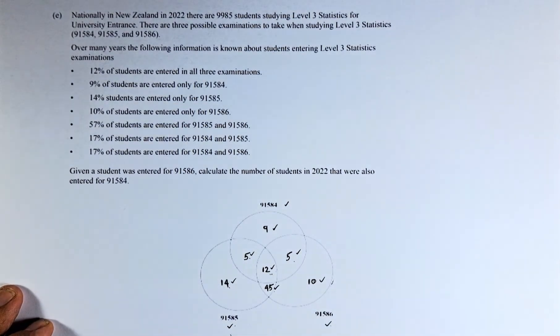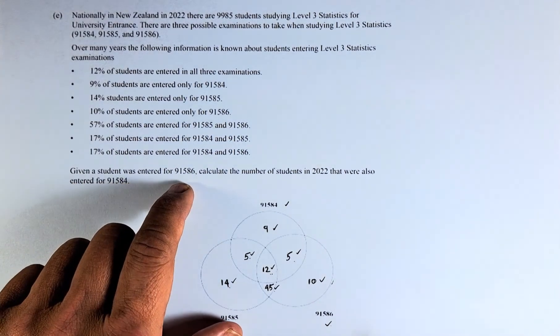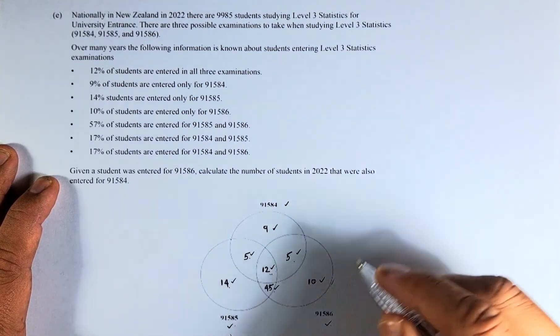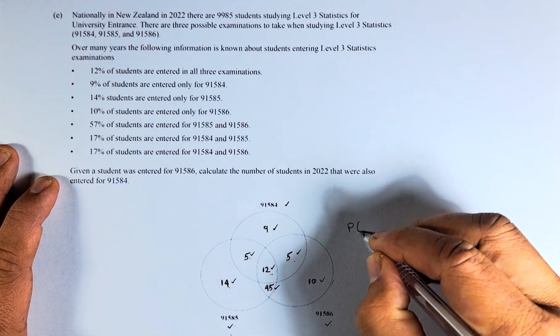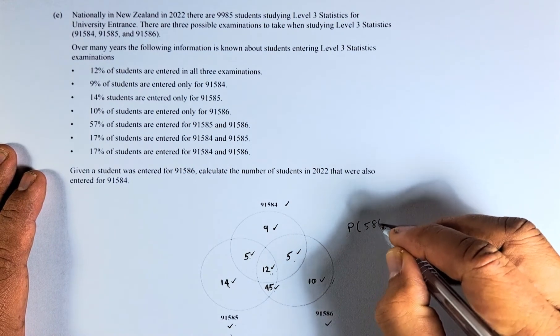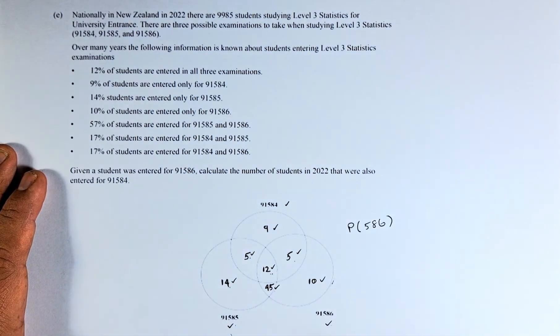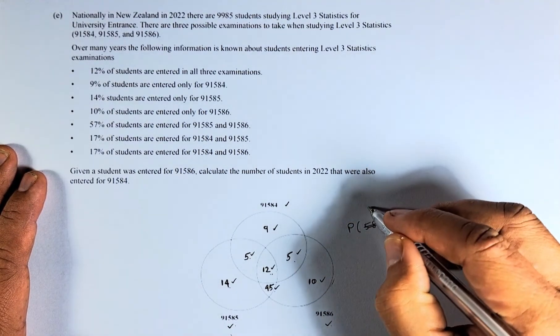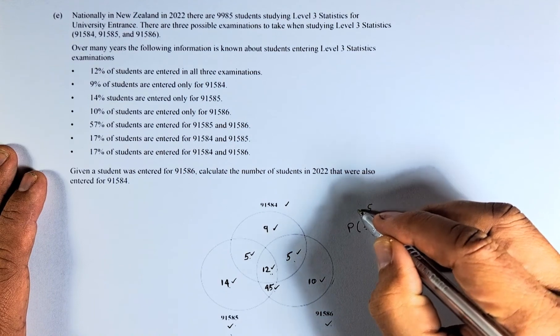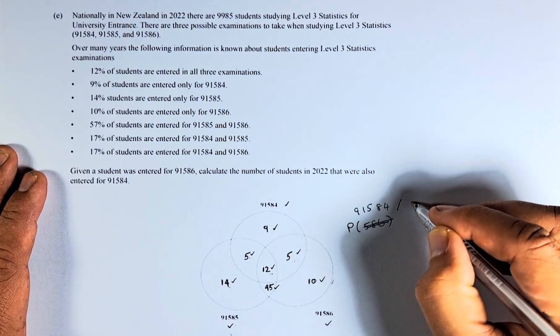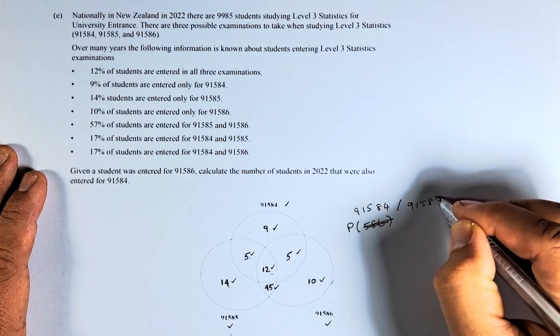Once we know this, we are going to calculate the probability. Given that the student entered for 91586, so we are looking at 91586, all these numbers here. So probability, entered for 91586. Given the student entered for 91586, calculate the probability they also entered for 91584. So 91584, given they did 91586.